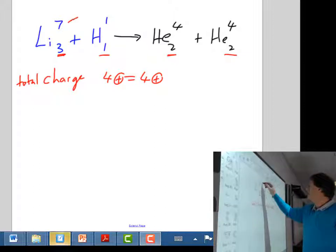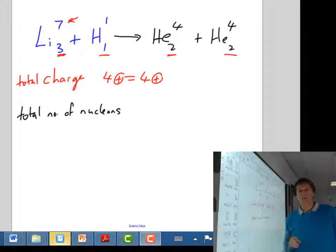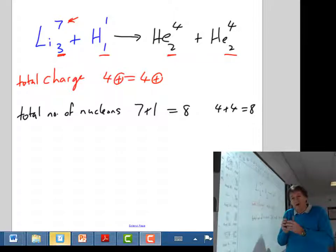The other thing that's conserved here, if you check the top numbers here, is the total mass number. So the total number of nucleons is conserved as well. So if you look at that, we've got 7 plus 1, it's equal to 8. And afterwards we've got 4 plus 4, that equals 8. So the total number of nucleons, the total number of protons plus neutrons, has to be the same before and after the collision.